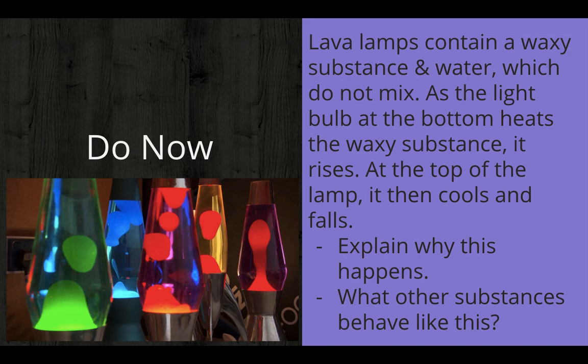Feel free to look at this Do Now if you've ever seen a lava lamp before. They have this goopy stuff in them that kind of rises and falls. And it rises as it gets heated up by a light bulb, and it cools and falls back down. So why might that be using what we've learned in chemistry so far? And where else does this happen? Take a moment to think about that.